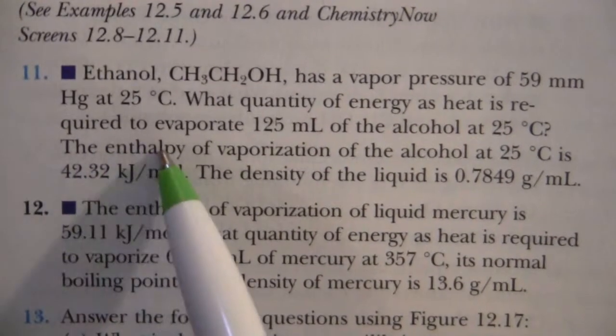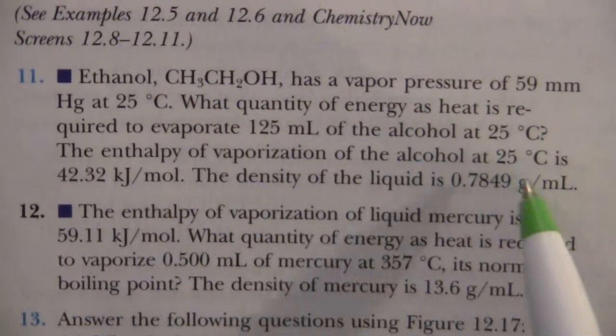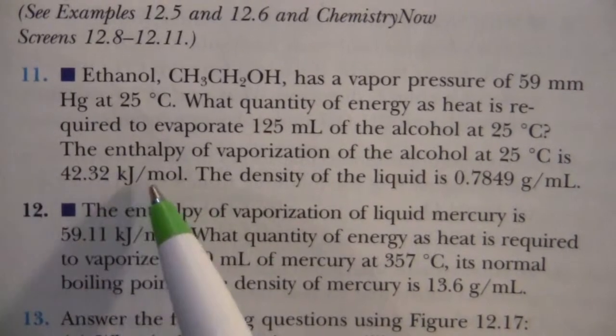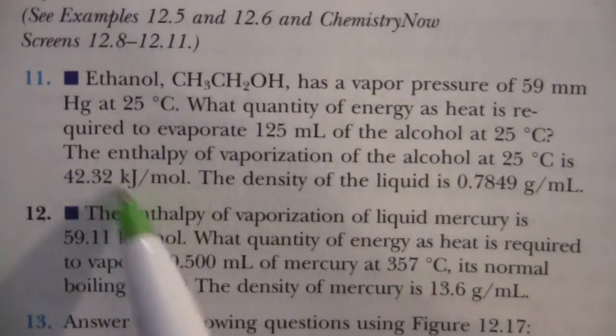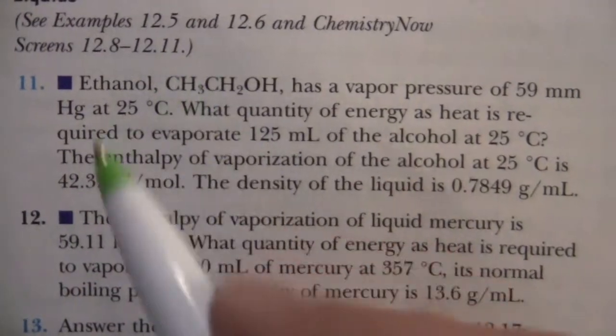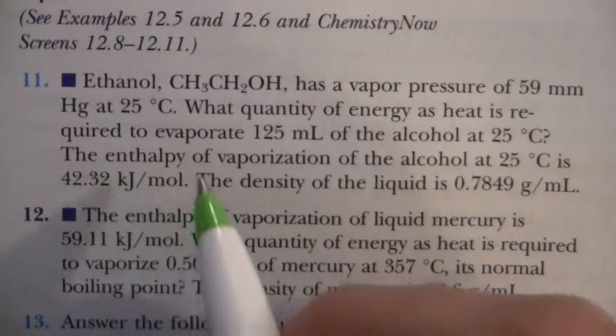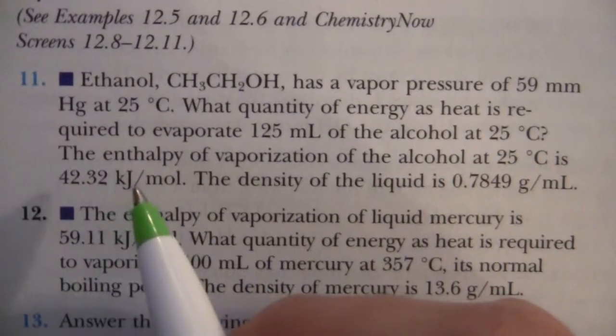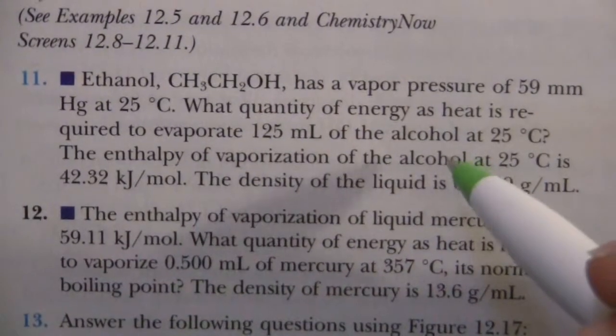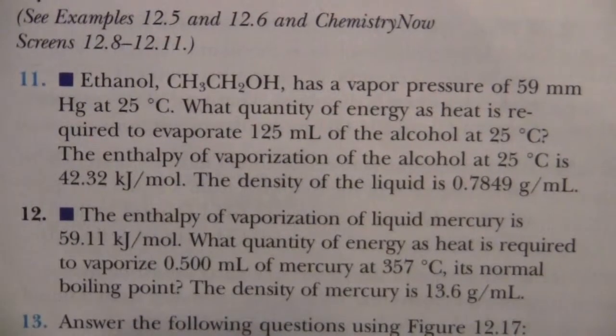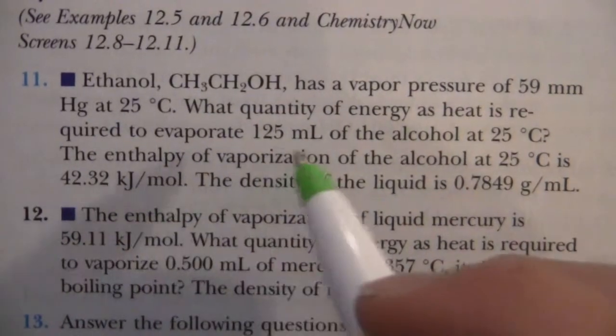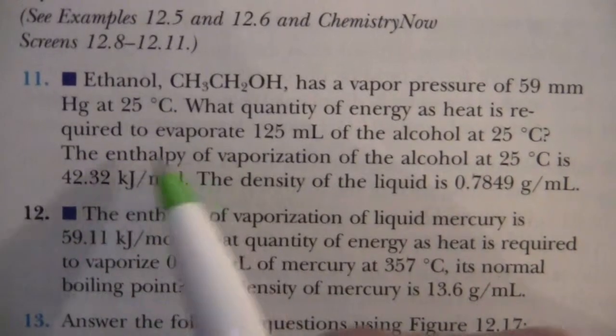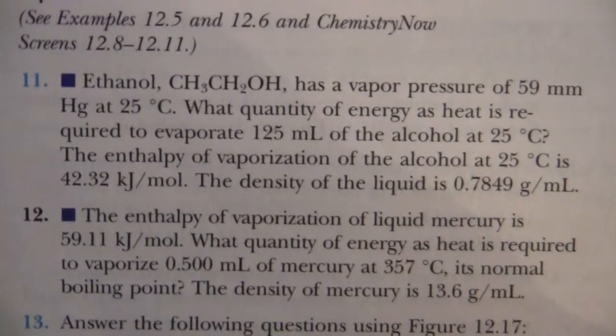It gives us its enthalpy of vaporization at that temperature, which is 42.32 kilojoules per mole. So just like with the one before, kilojoules per mole means there's this many kilojoules, 42.32 kilojoules, for every mole of this alcohol that is vaporized at that temperature. That's how much energy is required to vaporize each mole of the alcohol.